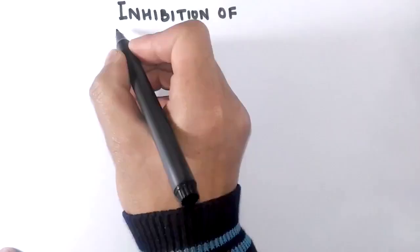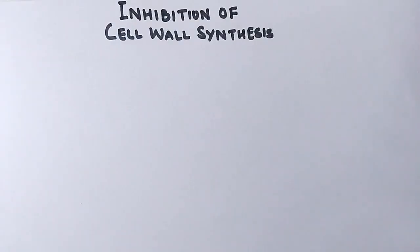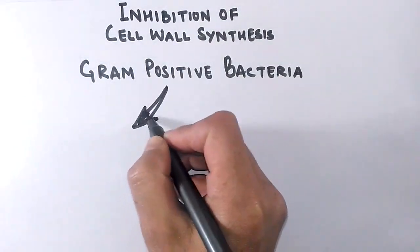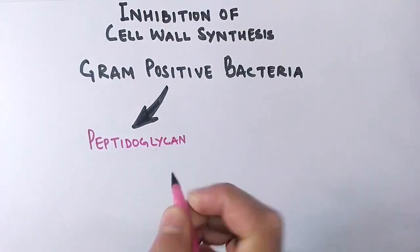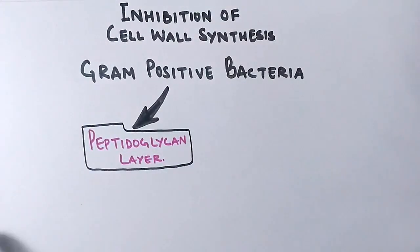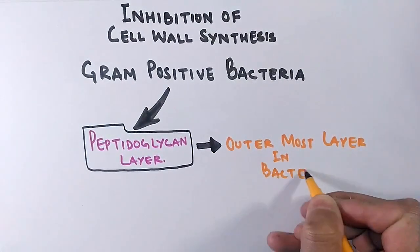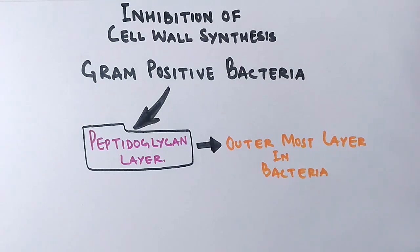Then there is inhibition of cell wall synthesis by antibiotics, and it mostly occurs in gram-positive bacteria because the antibiotic targets the peptidoglycan layer. This peptidoglycan layer is mostly present in gram-positive bacteria in large quantity, whereas it's present in gram-negative bacteria 5 to 10 percent and that too on the inner side, while in case of gram-positive bacteria it's present on the outer side of cell wall. That's why it mostly occurs in gram-positive bacteria.